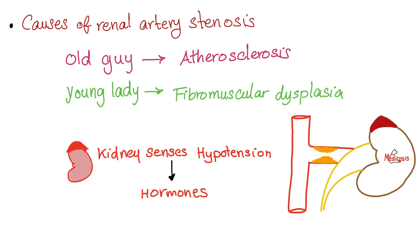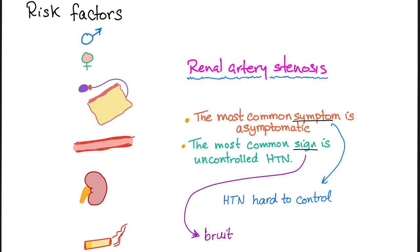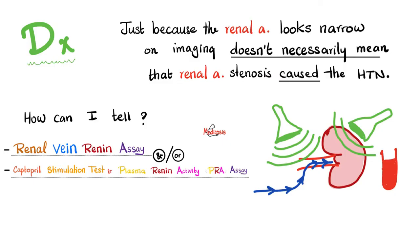Since this hypertension has a cause, it's called secondary hypertension. If there's no identifiable cause, it's called primary hypertension. Most patients with renal artery stenosis are asymptomatic. Those who are symptomatic present with hypertension, often as headaches. You can listen with a stethoscope — since the artery is narrow, blood flow velocity increases, creating turbulence heard as a bruit.